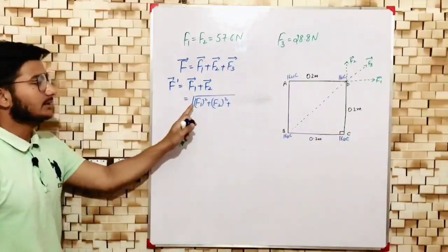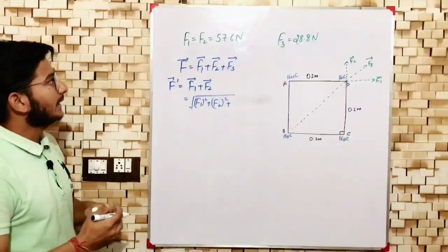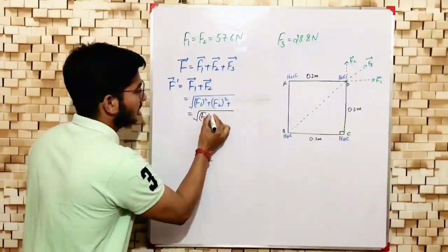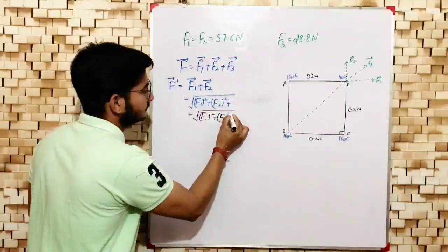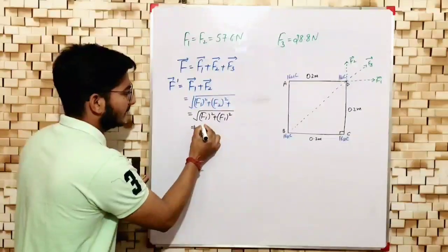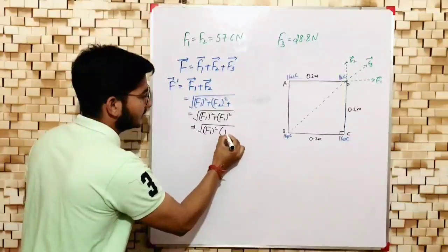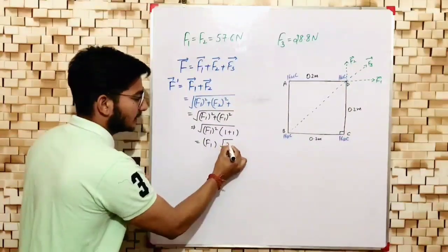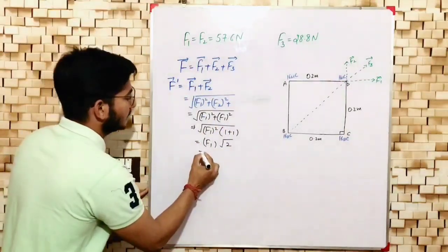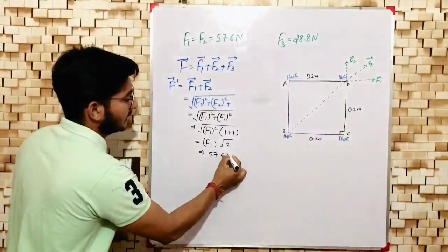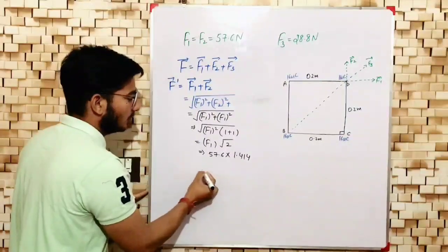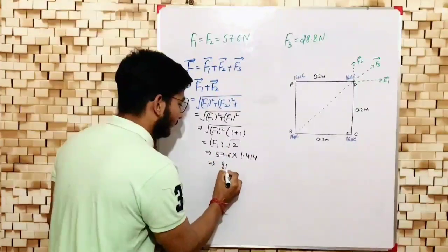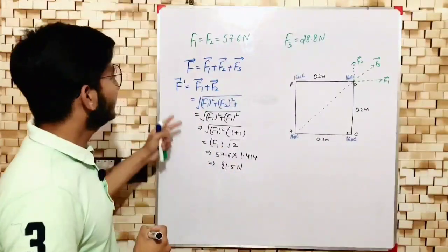We are left with F' = √(F1² + F2²). Since F1 and F2 are equal, this becomes √(2·F1²) = F1√2. Substituting F1 = 57.6 Newton and √2 = 1.414, we get F' = 57.6 × 1.414, which gives approximately 81.5 Newton.